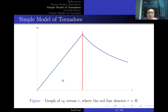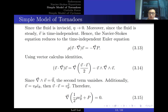Graphing the velocity field, we see that inside the tornado it increases linearly with radius, while outside it is a monotonically decreasing function — exactly like the electric field from a uniformly charged cylinder. There are many analogous behaviors between fluid dynamics and electromagnetism. Now, to solve for pressure as a function of r: since the fluid is inviscid we set eta to zero, and since the fluid is steady, V is time-independent.